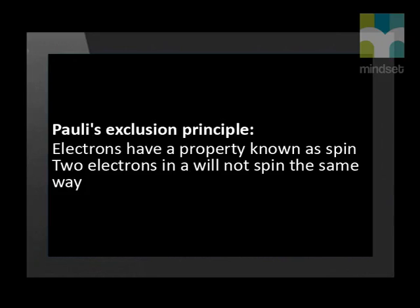This is called Pauli's exclusion principle. It states that all electrons have a property called spin, and two electrons in a sub-shell will not spin in the same way.